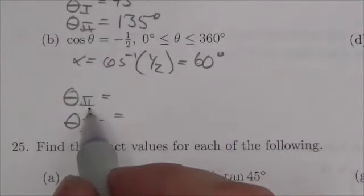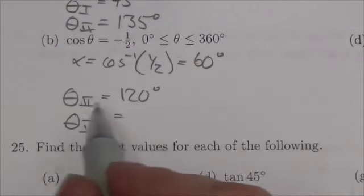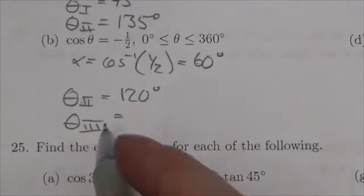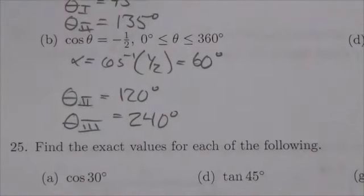So now to put that into the proper quadrants: 180 minus 60 degrees is going to give me 120 degrees. That's in the second quadrant. In the third quadrant, 180 plus 60 degrees is 240 degrees. So those are the two angles I'm looking for.